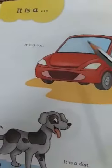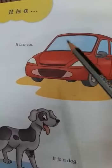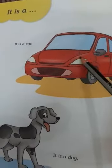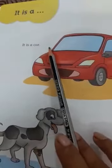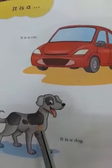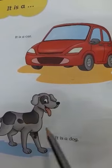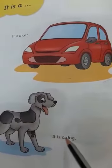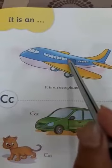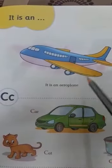It is a. The first picture is car. What is it? It is a car. Next picture: dog. What is it? It is a dog. Next page — what is it? It is an aeroplane.